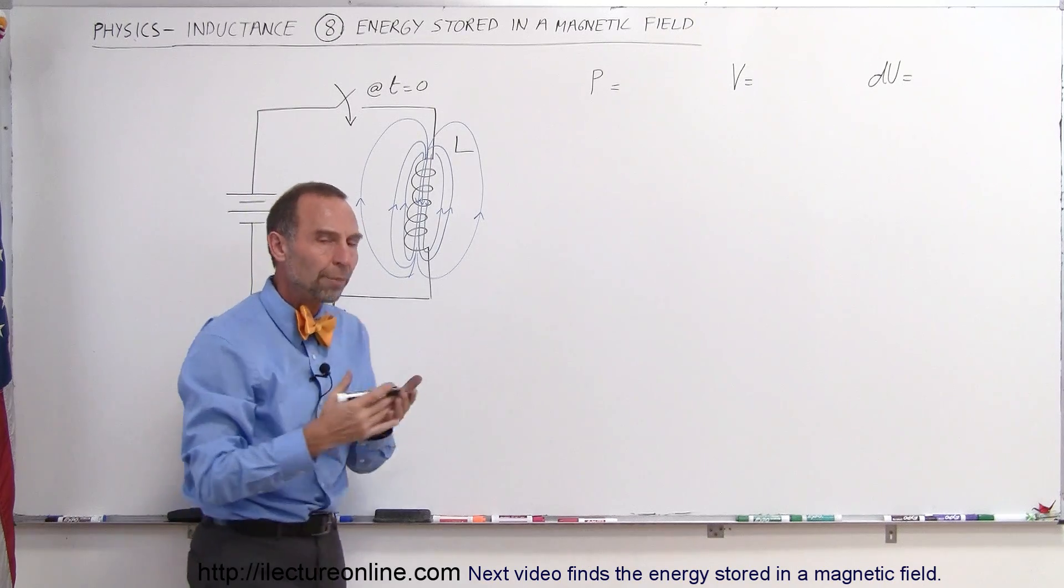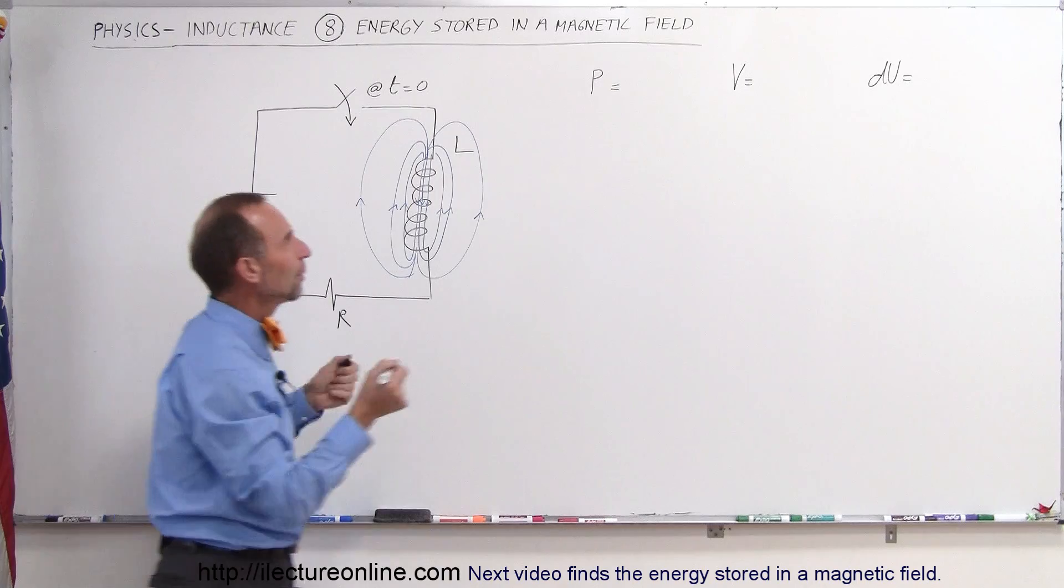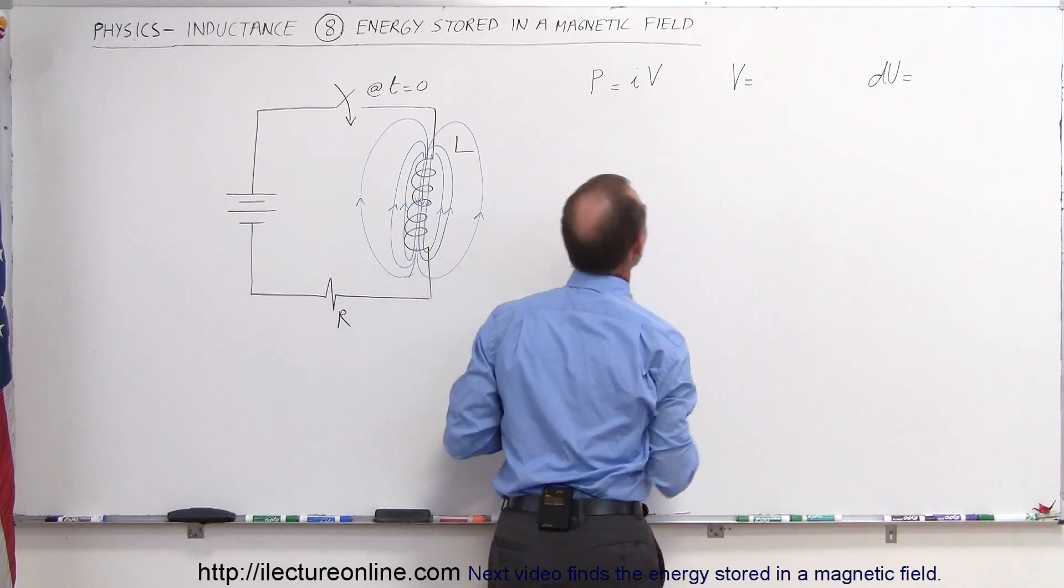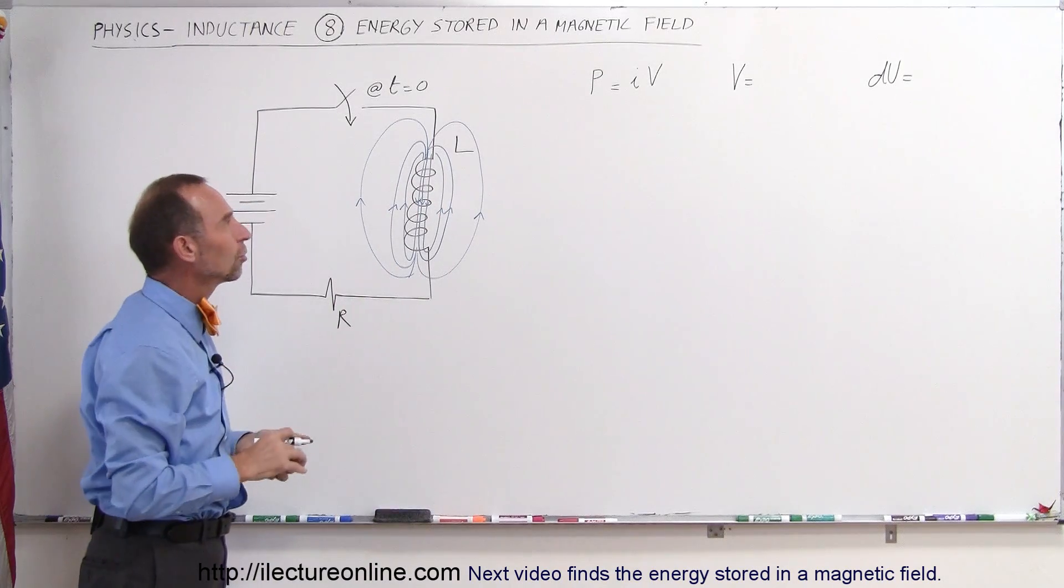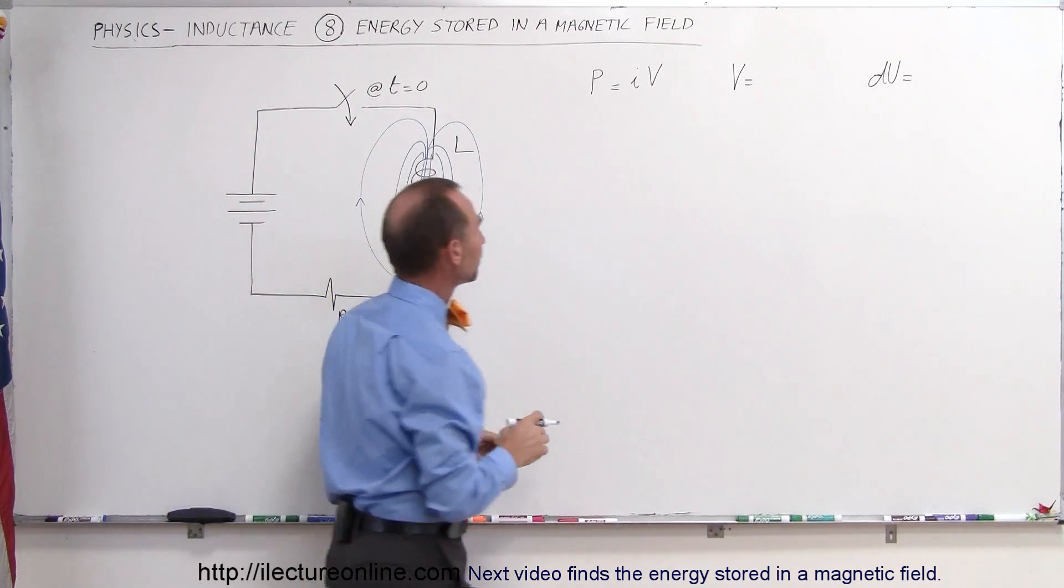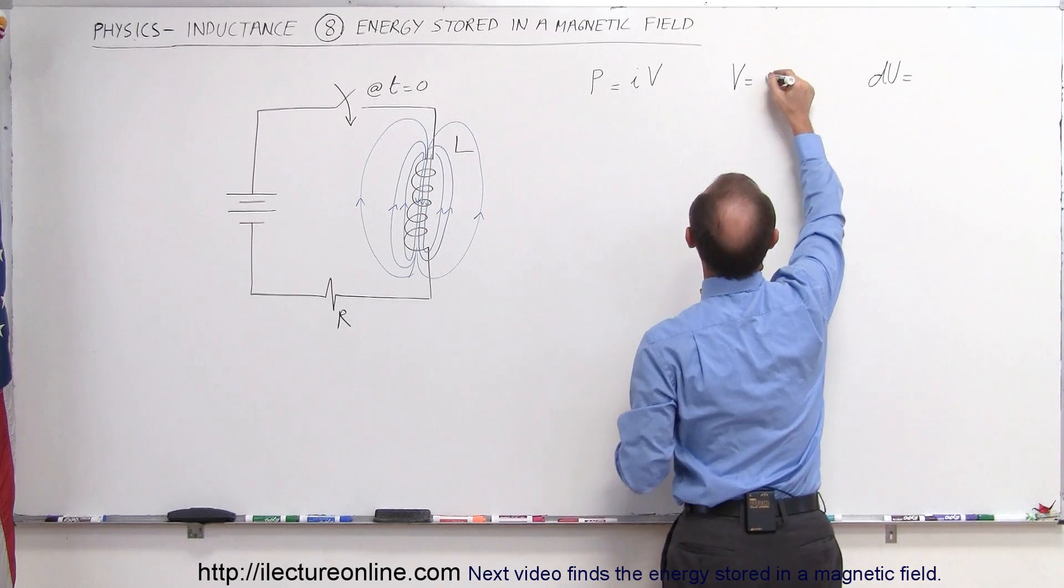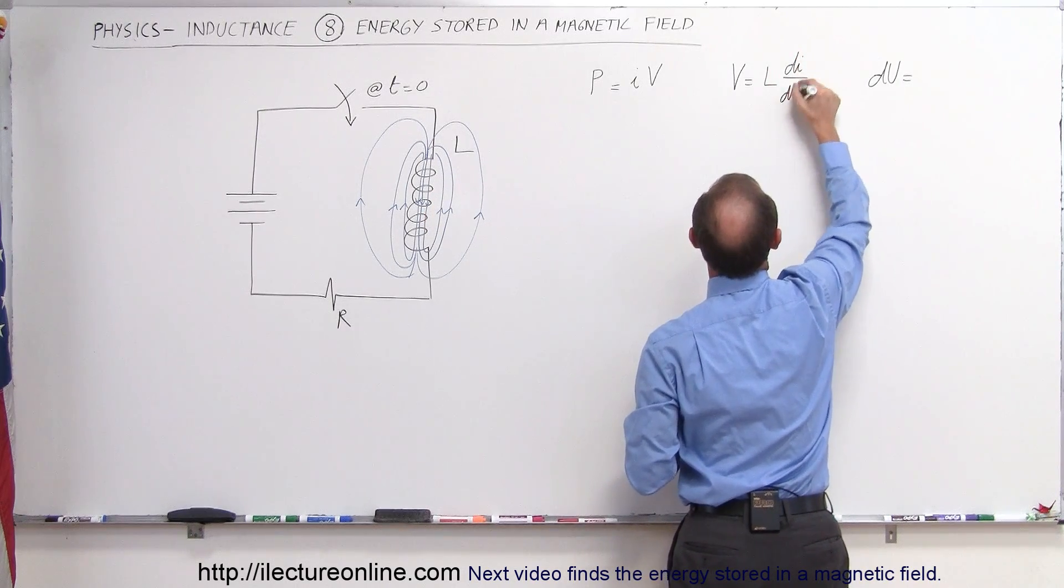Power produced or power supplied to the circuit can be written as a product of the current I times the voltage V. So I times V is a good way to calculate the power given to the circuit. And then, of course, we know that the voltage across the inductor is equal to the self-inductance times the change in the current with respect to time.